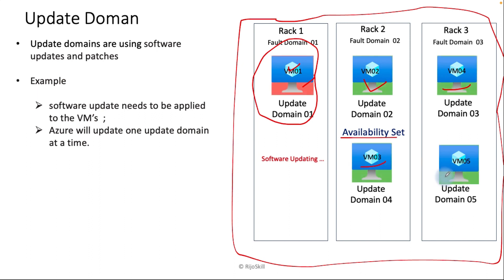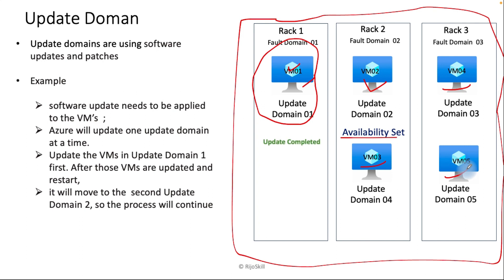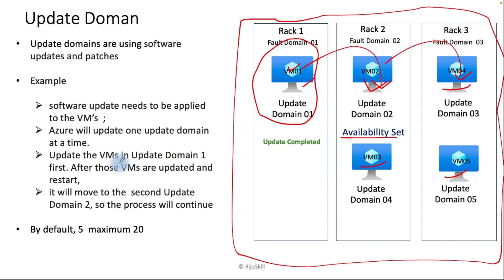Software updating starts on update domain one only. The remaining old domains two and three will not be updated at that time, so you won't face any single point of failure — only one domain is updated and restarted at a time while the remaining domains stay available. After finishing the update of domain one, it moves to updating domain two. This sequential process continues: planned maintenance updates only one update domain at a time while the remaining domains remain available.